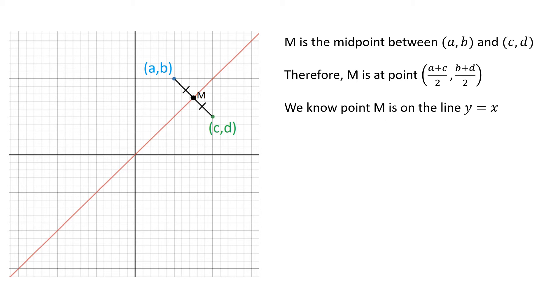So we also know that m is on the line y equals x. Well, if y equals x, then our y coordinate should equal our x coordinate: b plus d divided by 2 equals a plus c divided by 2. Since we're both divided by 2, this implies that b plus d is equal to a plus c. This is our first step in our proof. We're going to put this equation to the side, but we're going to use it later.